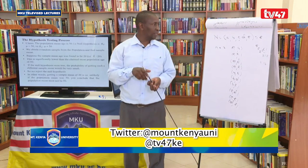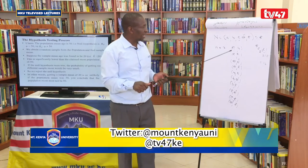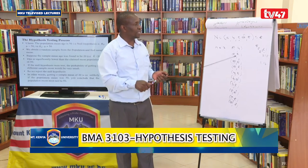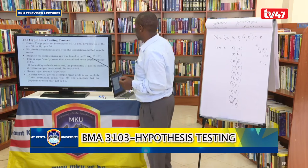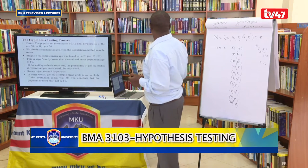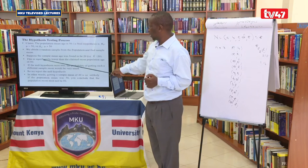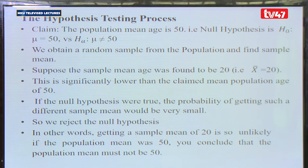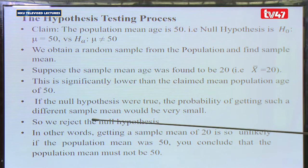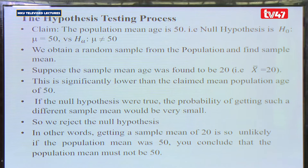When we take a random sample, any one of these possible samples could have been selected — that is why we call them random samples. Now suppose the sample mean age was found to be 20 years. This is the X-bar. This is significantly lower than the claimed population mean age of 50. If the null hypothesis were true, the probability of getting such a different sample mean would be very small. So we reject the null hypothesis.